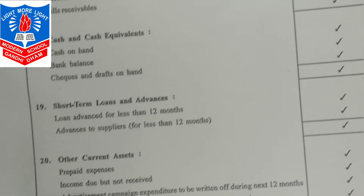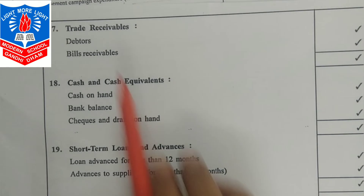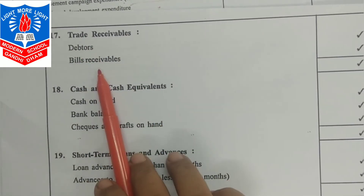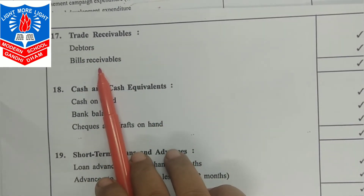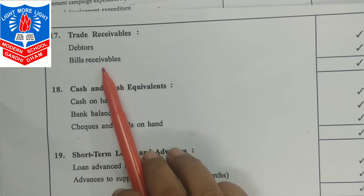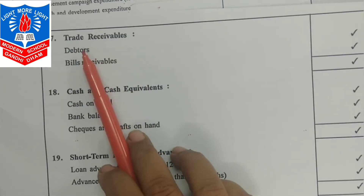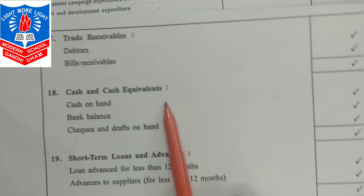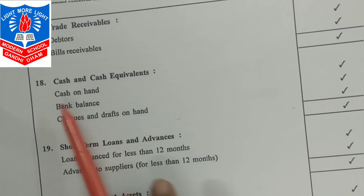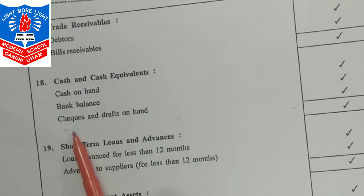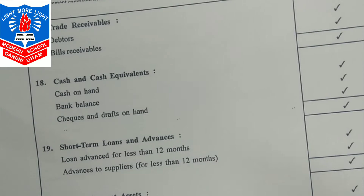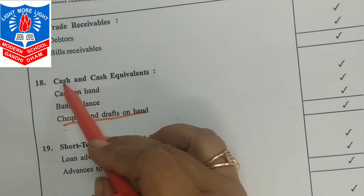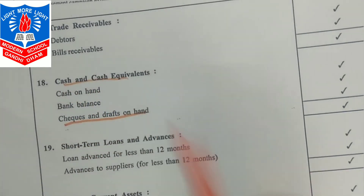Trade receivables include debtors and bills receivable — just as trade payables had creditors and bills payable. Cash and cash equivalents include cash on hand, bank balance, and cheques and drafts on hand.